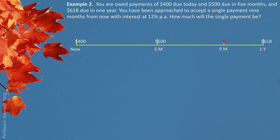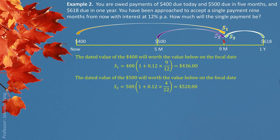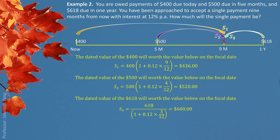For $500, after four months, what the equivalent value should be. And for $618, three months earlier than the focal date, what the equivalent value should be. The equivalent value for $400 on the focal date is S1, for $500 it is S2, and for $618 it is S3. We can see that S1 and S2 are future values, while S3 is a present value.